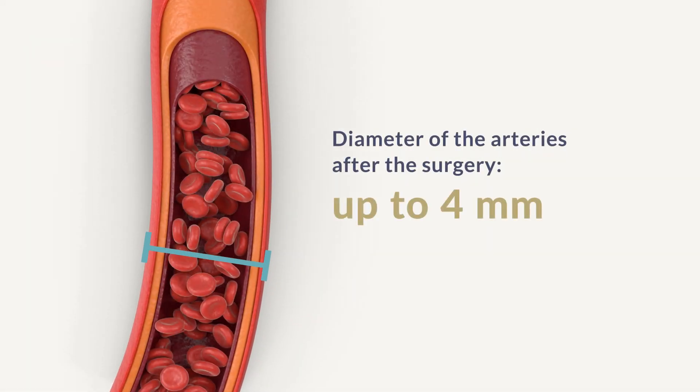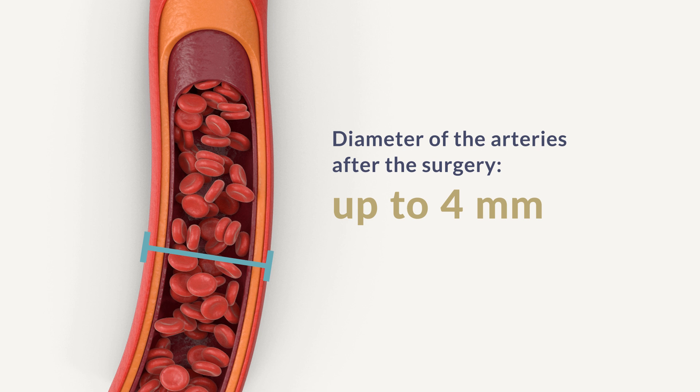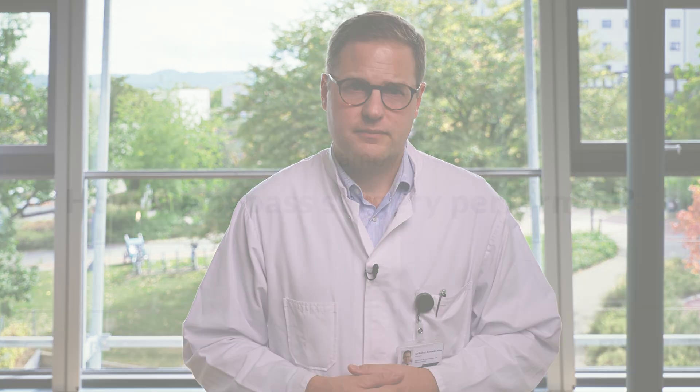Over time, the bypass will adapt to the needs of the brain. If there is a high need for more blood, the vessel will grow, its diameter will increase, and it can become up to three or four millimeters in size — comparable to the thickness of the middle cerebral artery. This increased blood flow then ensures that the brain's needs are adequately met. Patients also often report that when the vessel has grown a little larger, they can feel an increased pulsation in front of the ear, which is a sign that the bypass is working well and more blood is getting to the brain.